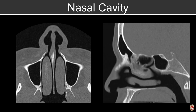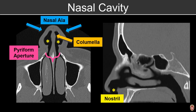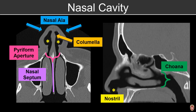Looking from below, we can identify the external soft tissue portion of the nose, referred to as the nasal ala. Within the midline, we have the columella, a soft tissue structure that divides the nostrils into two separate compartments. Those nostrils open up into the nasal cavity through a bony inlet referred to as the piriform aperture, found at the level of the frontal process of the maxilla. Posteriorly, we have the choana, separating the nasal cavity from the nasopharynx, and within the midline, we have the nasal septum.